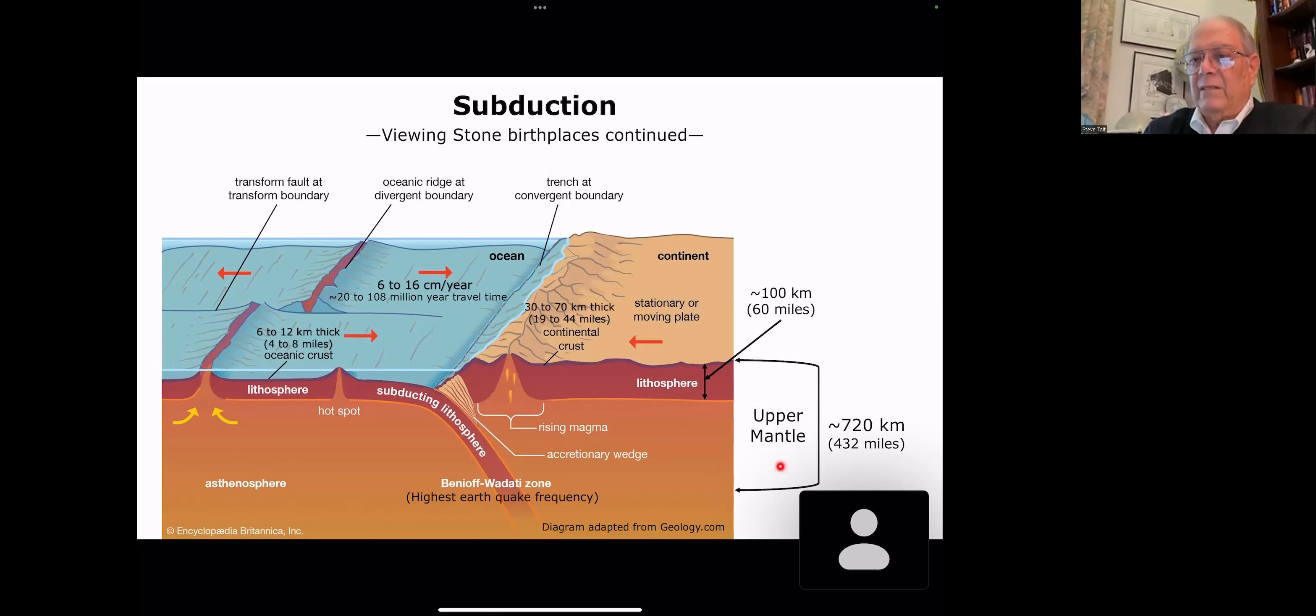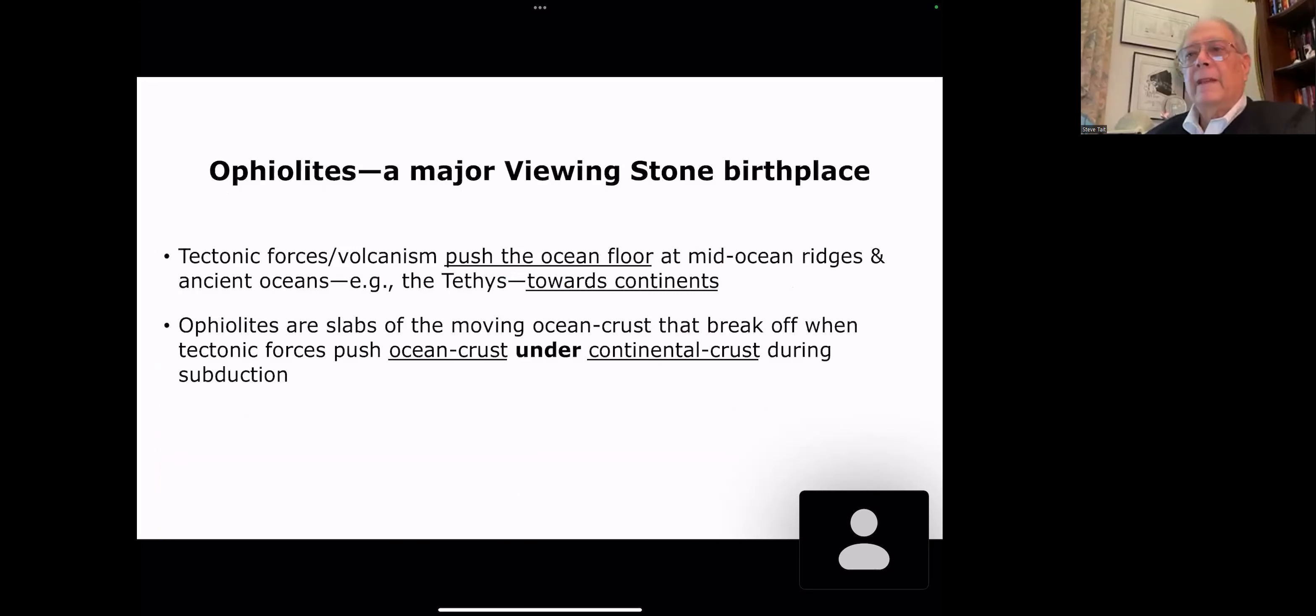So now we can start to try and define ophiolites. Remember we were just talking about how tectonic forces and volcanism push the ocean floor at the mid-ocean ridges and ancient oceans like the Tethys towards continents. Ophiolites are slabs of moving ocean crust that break off when the tectonic forces push the ocean crust under the continental crust during the subduction process.